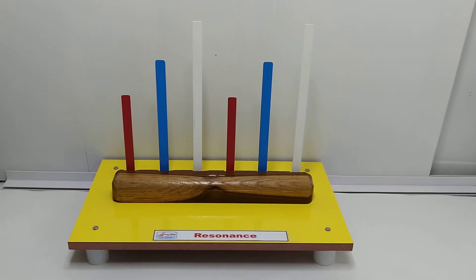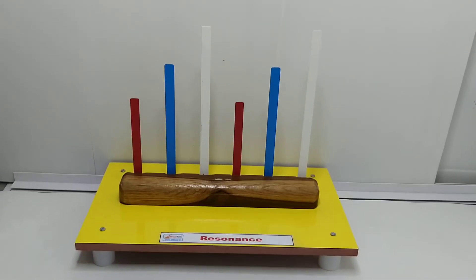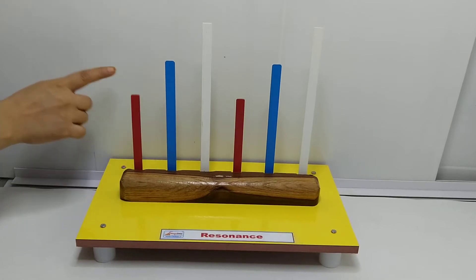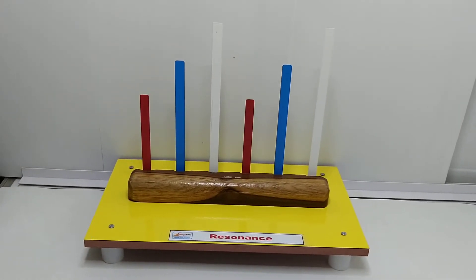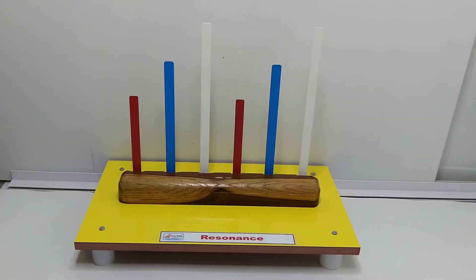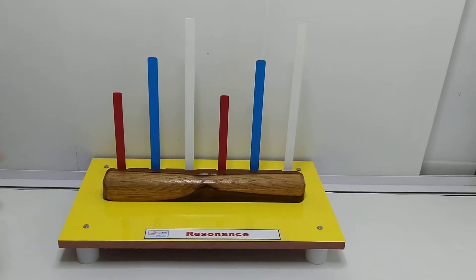can see there are three pairs of spring steel strips. These are steel strips which are spring-like. Now there are three pairs: one is red, blue, and white. These three strips, for example blue...